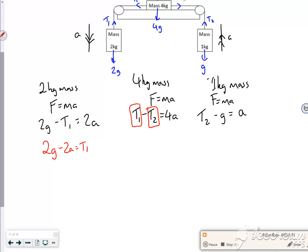So that can go here. So 2g minus 2a is there for T1. And then minus, and then if I rearrange this, T2 is a plus g.